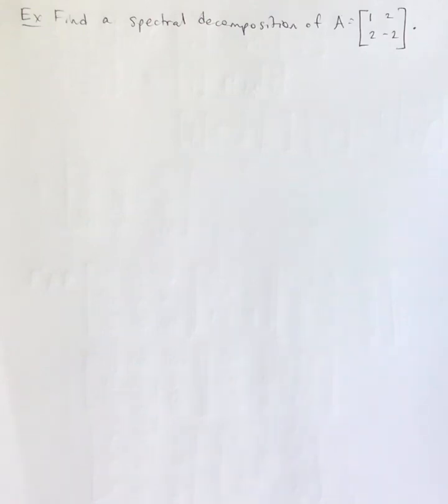Okay, in this problem we are going to find a spectral decomposition of a matrix A. And what a spectral decomposition is, first it's a decomposition. So basically we're going to write this matrix as a linear combination of other matrices.